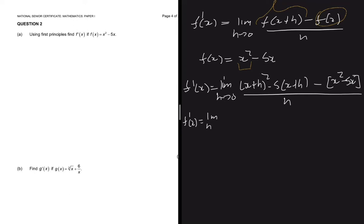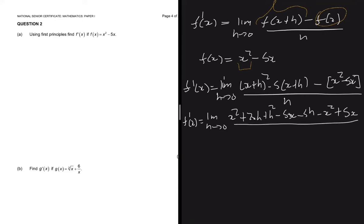And then we divide everything by h. So we're going to expand: x multiplied by x is x squared, multiplied by h is xh multiplied by 2, that is plus 2xh, h multiplied by h is h squared, minus 5 multiplied by x is minus 5x, and then minus 5h. Then we take the function itself out of the bracket, we're going to get minus x squared and then plus 5x, because of the minus sign outside.